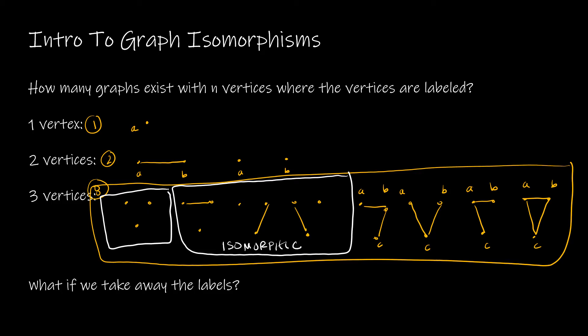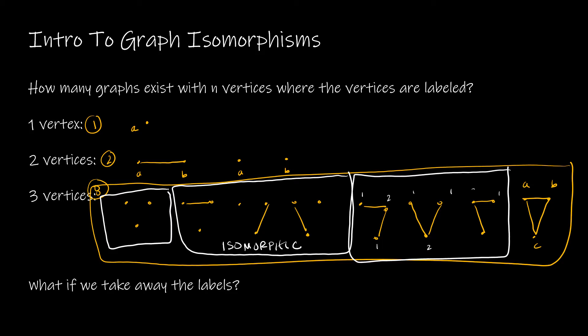These graphs are considered isomorphic. Essentially it means same number of edges, same number of vertices, same degree, same structure. Looking at the next set of three, if I take away all of those labels, these are all the same as well. I've got one vertex of degree one, one of degree two, and another of degree one — the same for all three. I have three vertices, two edges, and the same degree structure. So those three are all isomorphic.